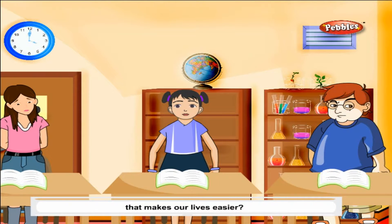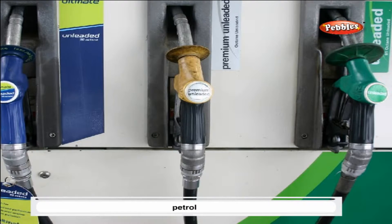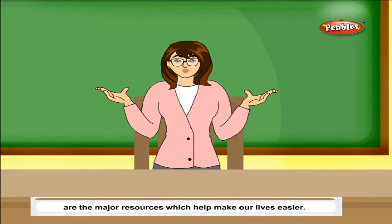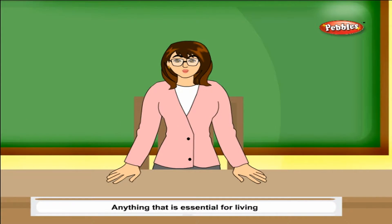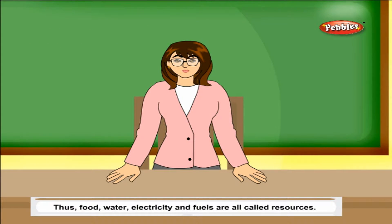Can you think of something that makes our lives easier? Electricity and fuel, such as petrol and cooking gas, are the major resources which help make our lives easier. Anything that is essential for living or which makes our lives easier is called a resource. Thus, food, water, electricity, and fuels are all called resources.